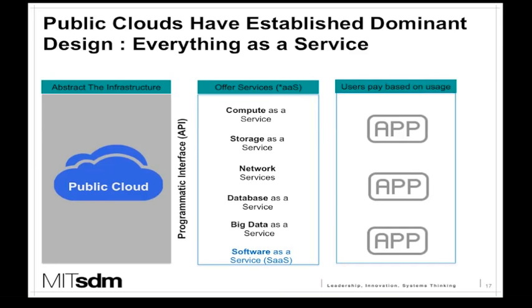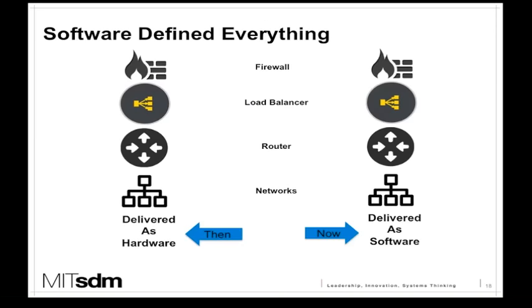That is a big shift — why can't the CIO offer business units all of these services and have some sort of chargeback where business units pay for the services they consume from IT? The other big shift is that a lot of things used to be deployed as hardware. Ten years ago, a firewall was a hardware appliance. Today you can get a software-defined firewall. Routers, networks, load balancers — more and more stuff is being delivered as software, and if it's software, it's relatively easier to control.